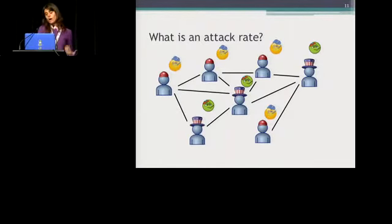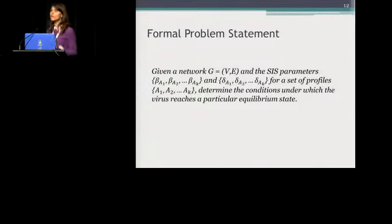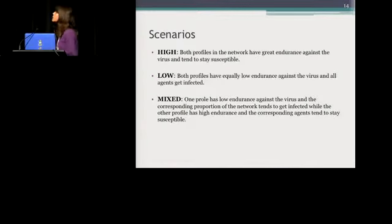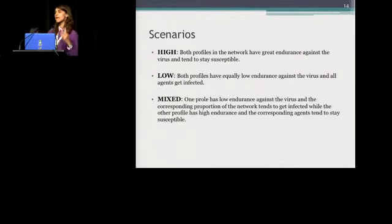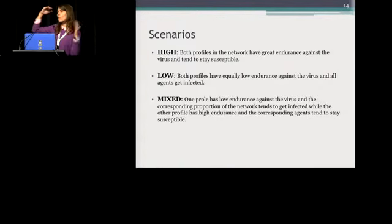Going back to the formal problem statement: we have a network, we have the SIS parameters, and we need to determine the conditions for the system to be in equilibrium. We start a dynamical system of differential equations, find the fixed points, and determine the stability conditions. The scenarios we use are high, low, and mixed. In high, both profiles have very low sensitivity against the virus. In low, both profiles have very high sensitivity — low endurance against the virus. In mixed, one profile has high sensitivity while the other has low sensitivity.